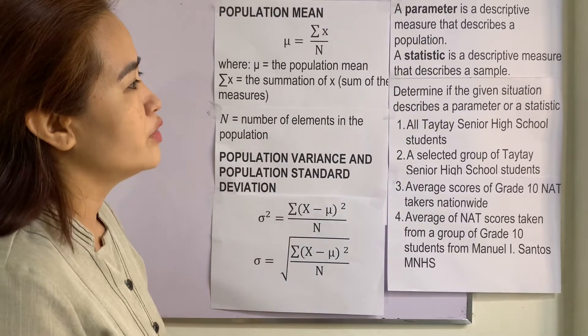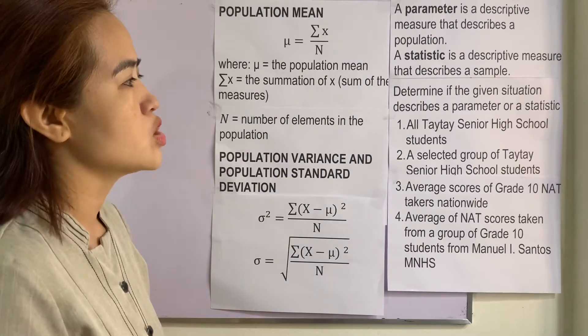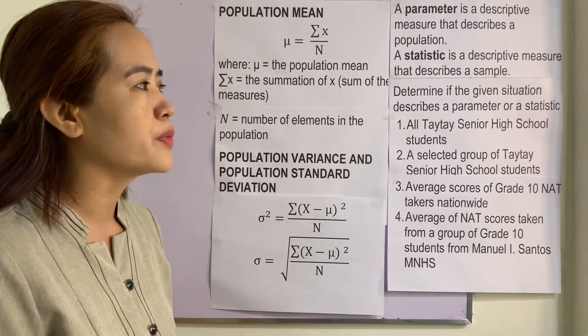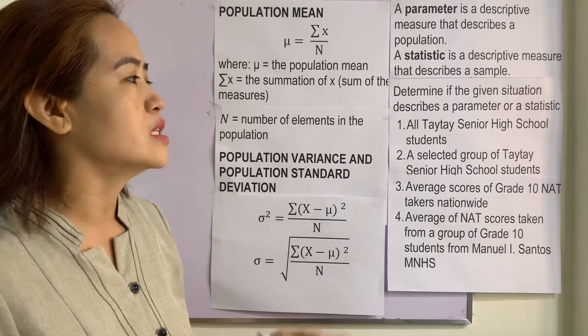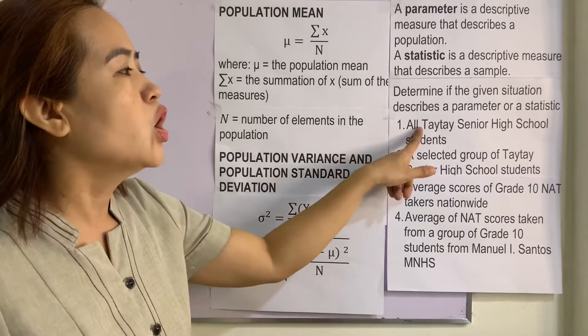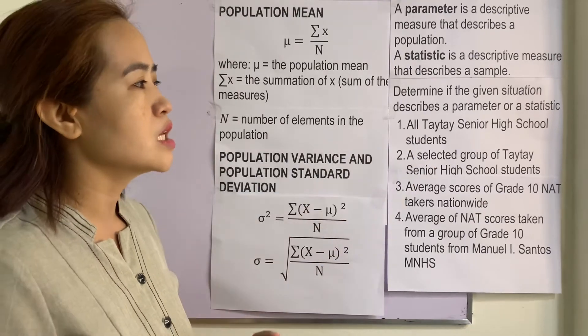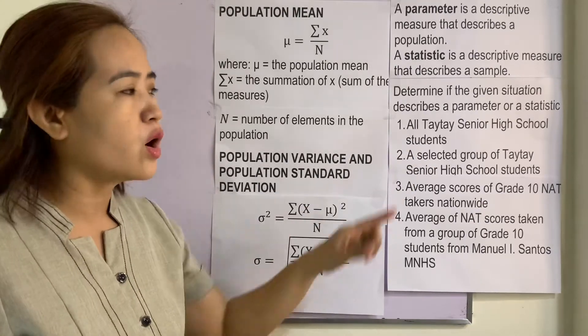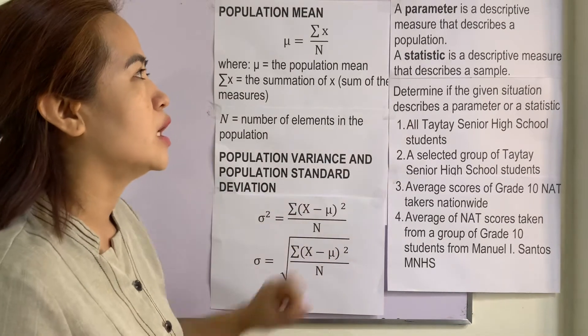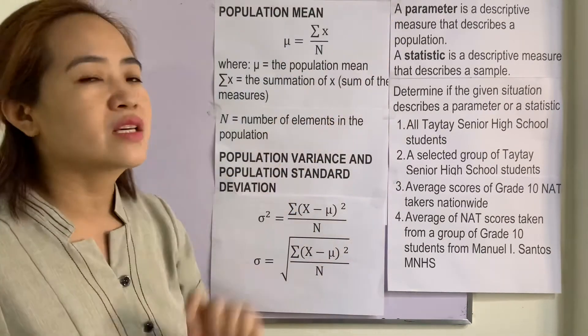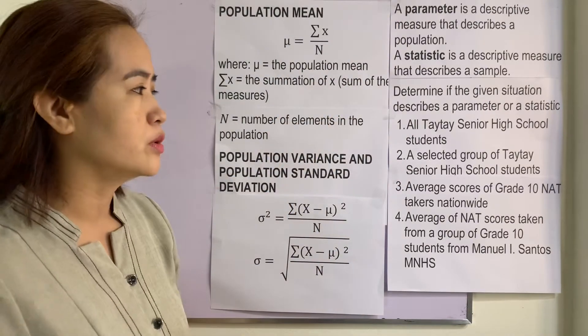Determine if the given situation describes a parameter or a statistic. First: all Tai Tai senior high school students. We are talking about the population here, so this is a parameter.